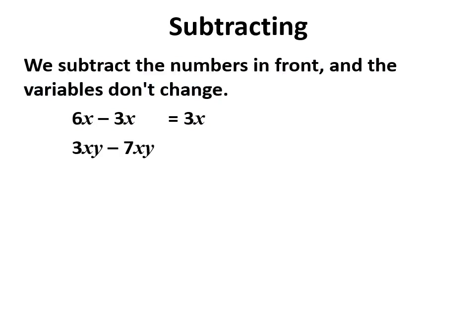3xy minus 7xy, both xy's. Minus 4 because 3 minus 7 is minus 4 and the xy's stay where they are. And same with x squareds, 8 of them minus 3 of them is 5 of them. Subtract the numbers and the variables don't change.